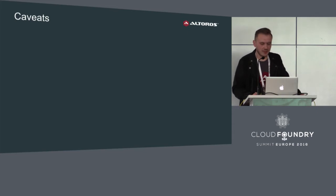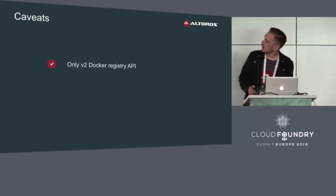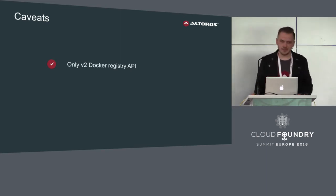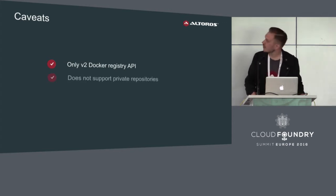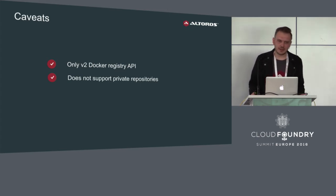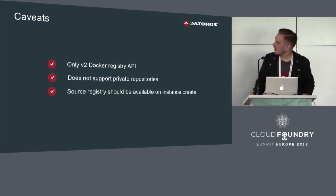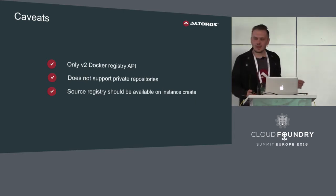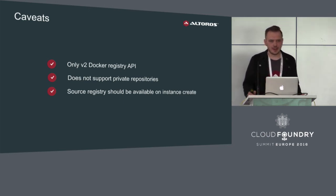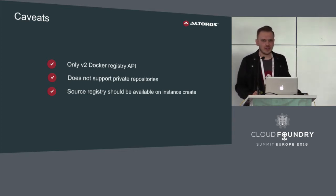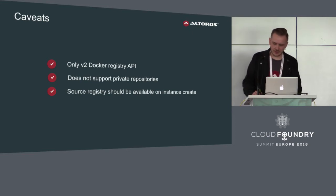There are caveats of running Docker images in Cloud Foundry. You can use only Docker Registry API version 2. It doesn't support private repos — you can only use public ones. Also, Diego doesn't cache pulled Docker images, so you need access to the Docker registry every time you scale up your application. For each new instance, it has to pull the Docker image. If the Docker registry is unavailable, you can get into trouble.